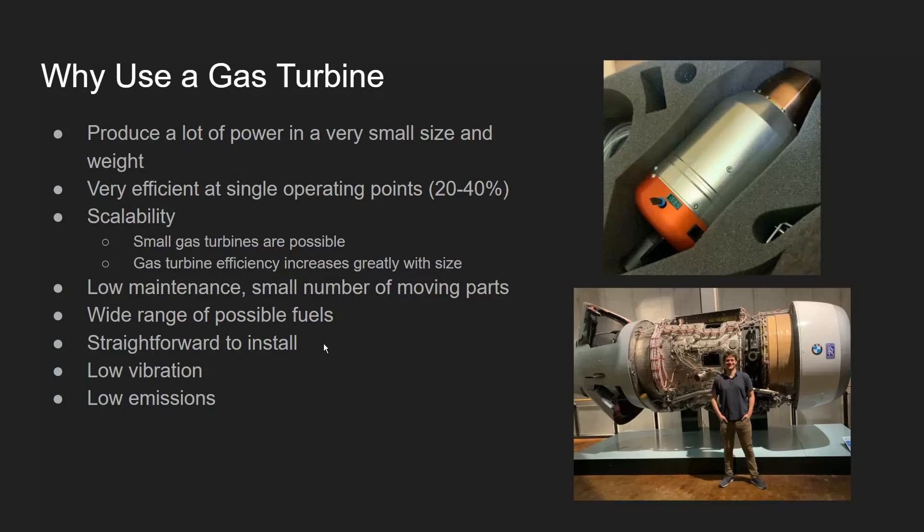You can balance the shaft and compressors to a very fine degree, but an internal combustion engine with the piston head, connecting rod, and crankshaft all moving in different directions at different rates is very difficult to balance. It's difficult to design around and difficult to dampen these vibrations, so the gas turbine presents a lot of advantages due to its relative simplicity of motion.